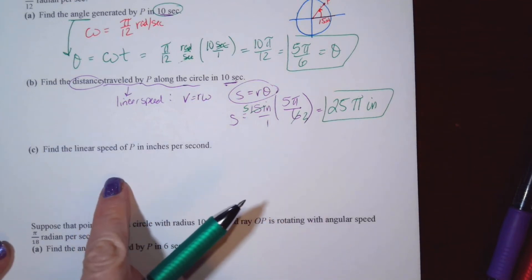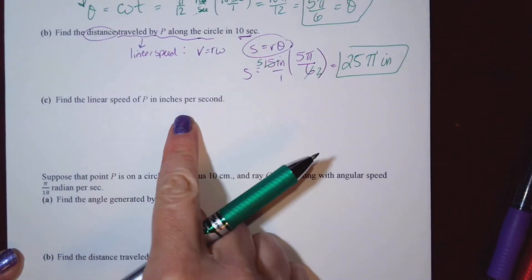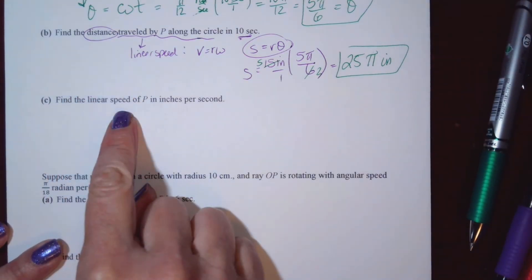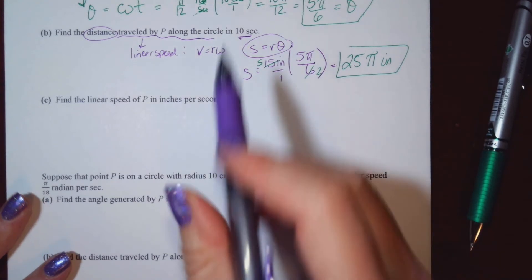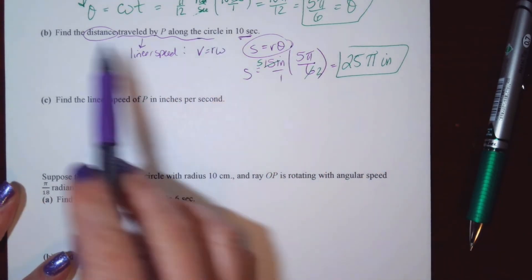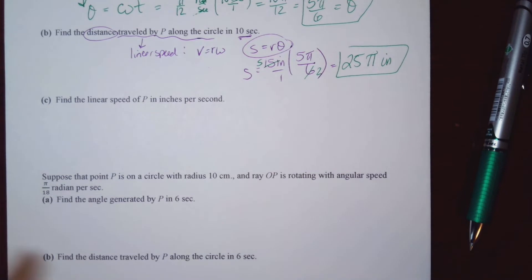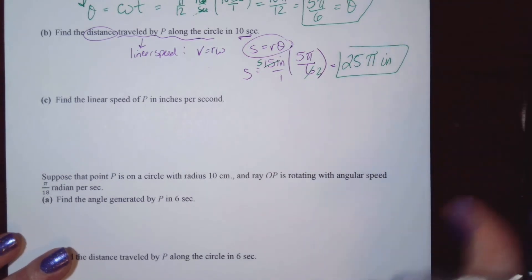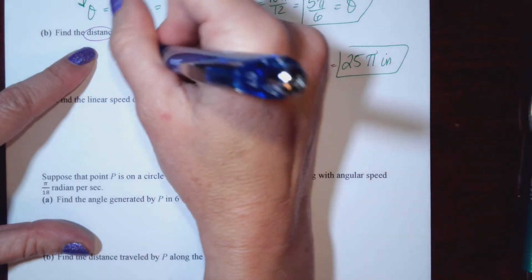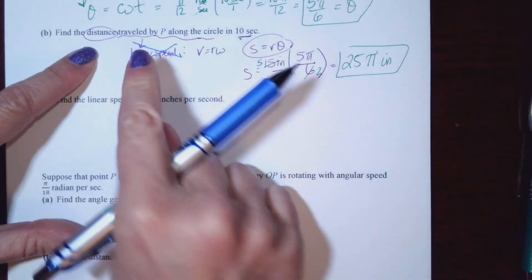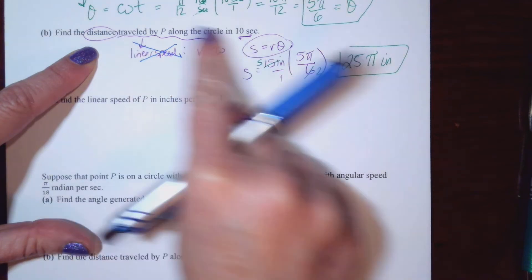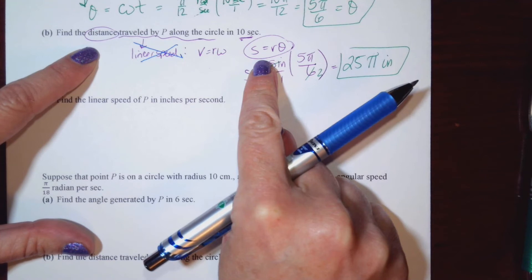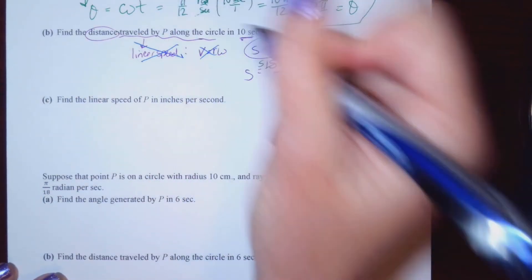Now, linear speed of P — that's V, not distance. Distance is S; linear speed is V, in inches per second. I misread the question earlier — distance is not speed. Distance is S; linear speed is V.